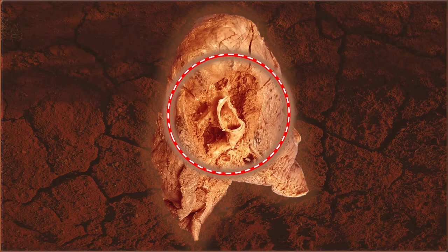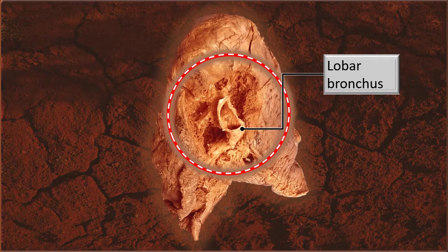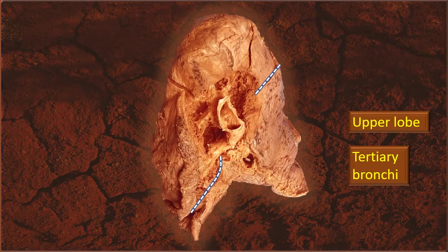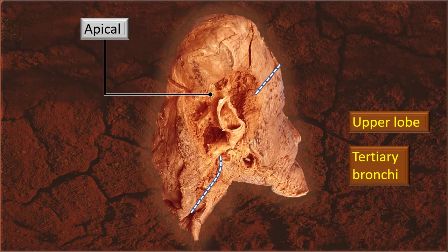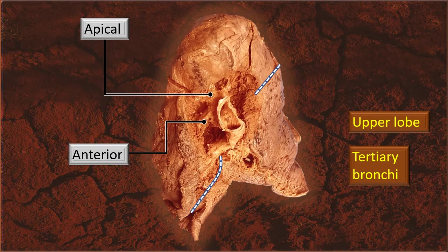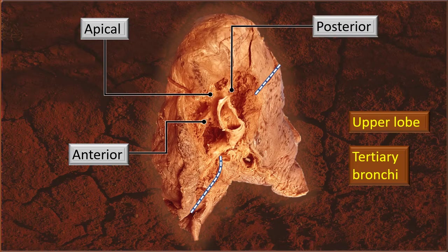Let us highlight this area and see the structures in this dissection. That is the lobar bronchus — the primary bronchus dividing into one bronchus for each of the lobes: upper, middle, and lower lobe. Now let us identify the tertiary bronchi of the upper lobe: the apical bronchus, anterior bronchus, and posterior bronchus.